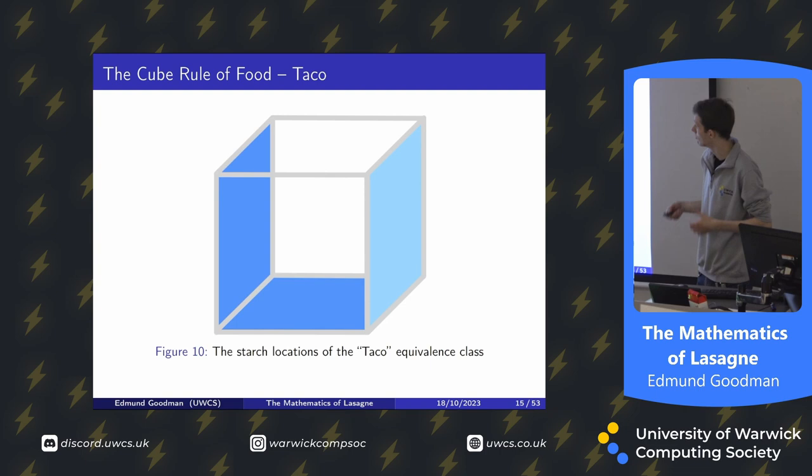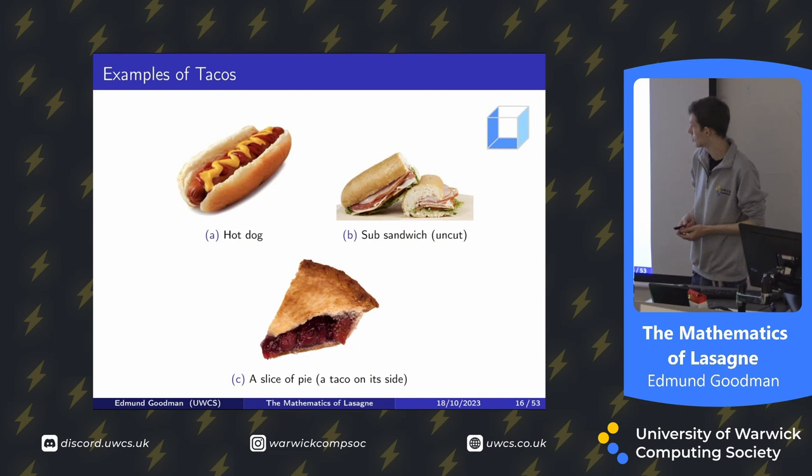The taco equivalence class: hot dogs are tacos, not sandwiches. Subway sandwiches which are uncut are tacos. And a slice of pie is a taco on its side — if you rotate it, it's a taco.